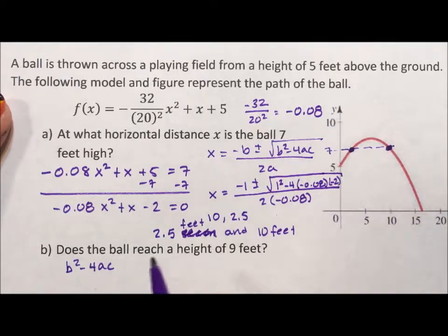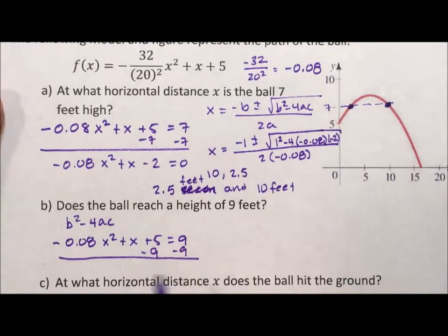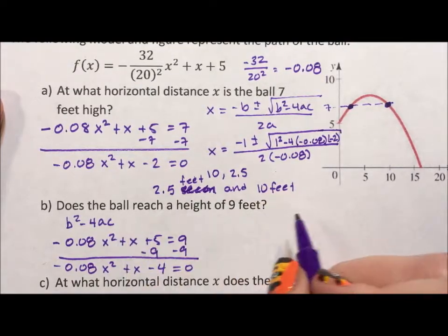So if I take negative 0.08 x squared plus x plus 5 and set it equal to 9, subtract the 9 over so that I have negative 0.08 x squared plus x minus 4 equals 0,